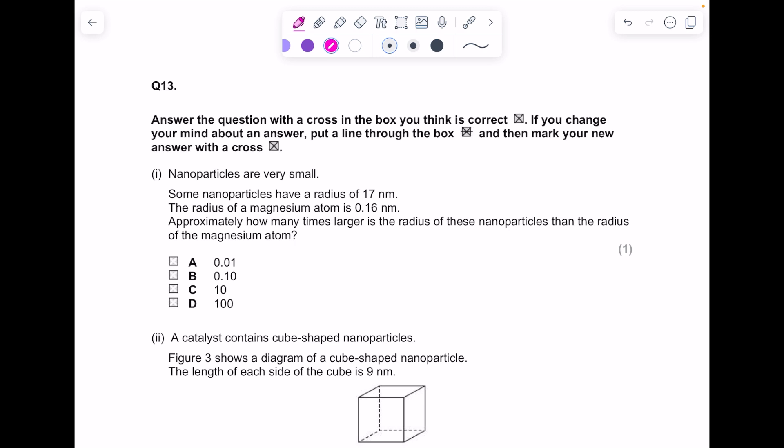Nanoparticles are very small. Some nanoparticles have a radius of 17 nanometers. The radius of a magnesium atom is 0.16 nanometers. Approximately how many times larger is the radius of these nanoparticles compared to the radius of a magnesium atom? So we can make those approximate. I'm going to do 17 divided by 0.17. The reason I've done that is these are all in terms of 1, 10, 100, 0.1, so my answer is 100 times larger. So the answer here is D.